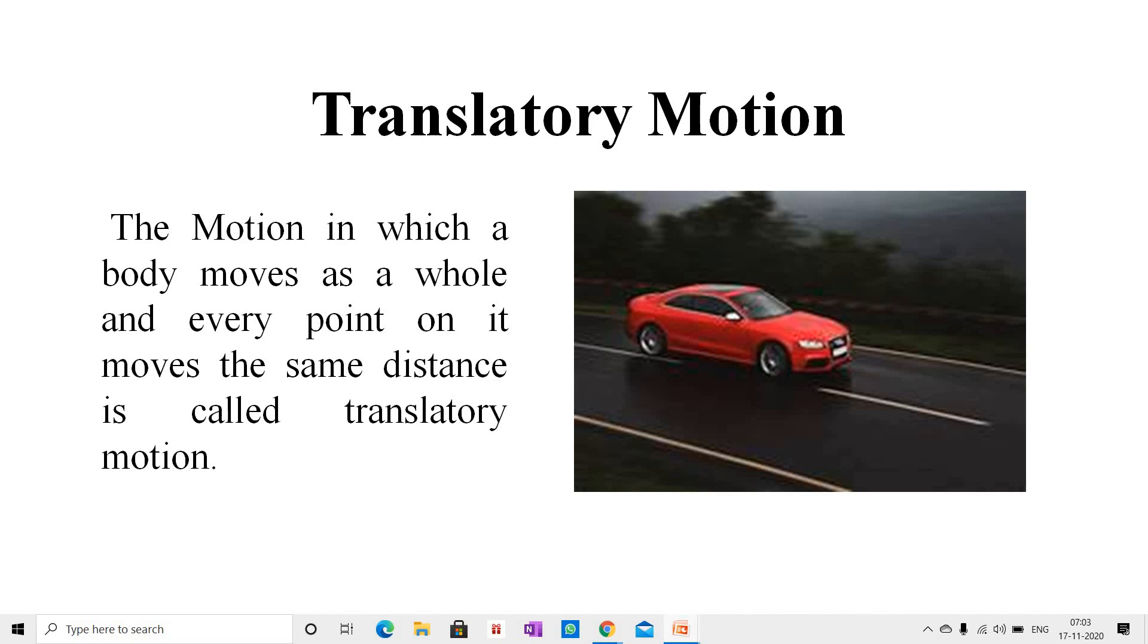In fact, most of the moving objects undergo translatory motion. Students, the path of a body undergoing translatory motion may be either linear, curved, or any irregular shape. Based on the path, translatory motion may be linear or rectilinear motion, curvilinear motion, and random motion.